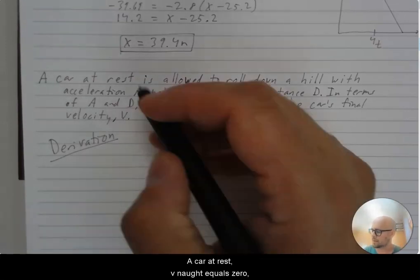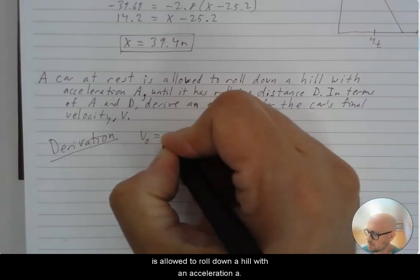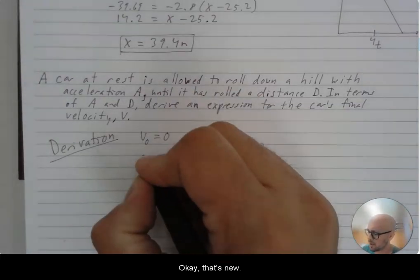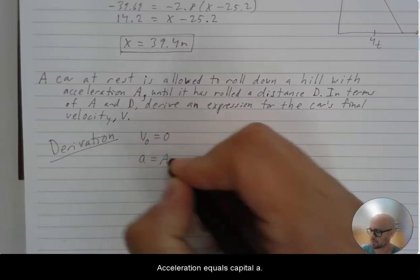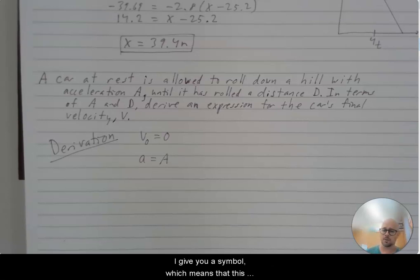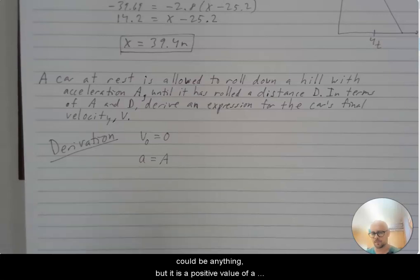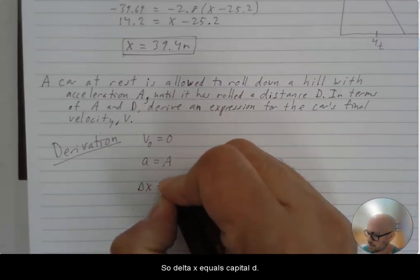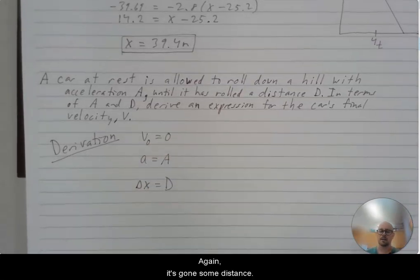A car at rest, v naught equals zero, is allowed to roll down a hill with an acceleration a. Okay, that's new. Acceleration equals capital A. Instead of giving you a number, I give you a symbol, which means that this problem, the acceleration could be anything, but it is a positive value of a here until it is rolled a distance d. So delta x equals capital D. Again, it's gone some distance. It could be any distance, but it's a distance d.